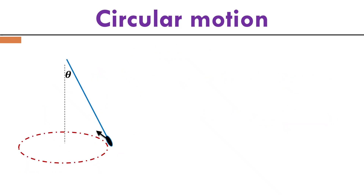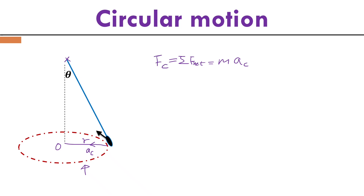Let's look at another example. Consider a string with one end fixed and a point mass tied to the other end, swung in a horizontal circle. The point mass moves in a circle on a horizontal plane, with a rotation center and radius. Because this point mass is moving in this circle, there should be acceleration pointing to the center, requiring a net external force — the centripetal force.